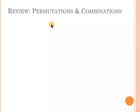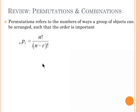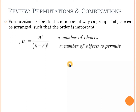We're going to start off with a review of permutations and combinations. Permutations refers to the number of ways a group of objects can be arranged such that the order is important. The formula for permutations is n pick r, which is n factorial divided by (n minus r) factorial. Here, n is the number of choices and r is the number of objects to permute.